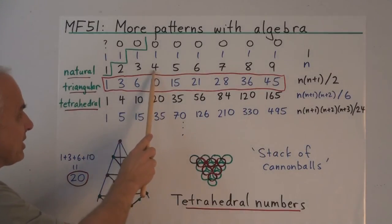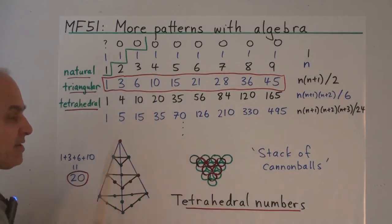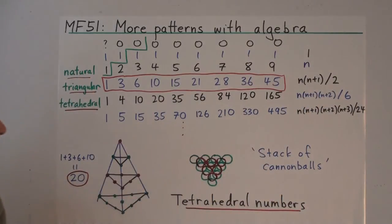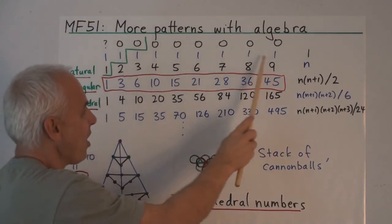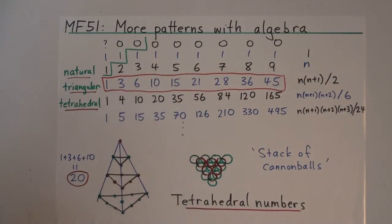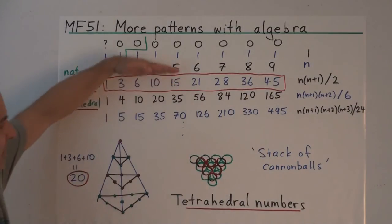So again, this thing here represents the difference between the 6 and the 10. There's our sequence of triangular numbers, whose nth term is n times n plus 1 over 2. There are the differences, which of course are just the natural numbers themselves. The differences between them are all 1, and the differences between all the 1's are all 0's.